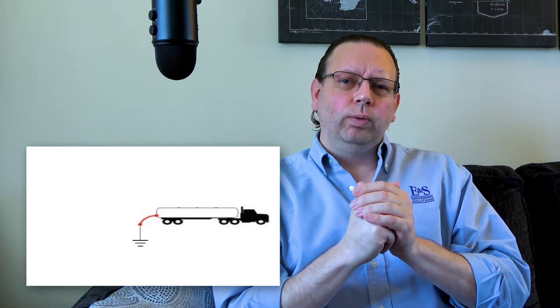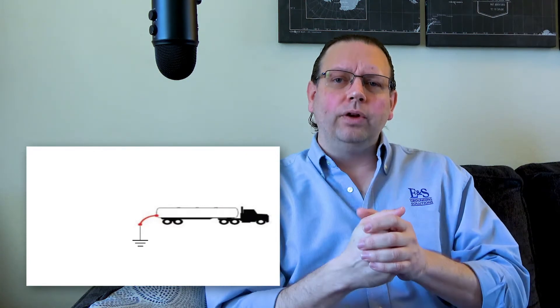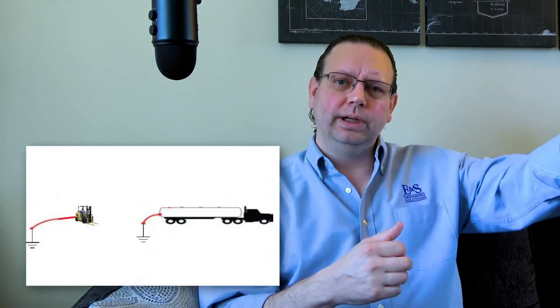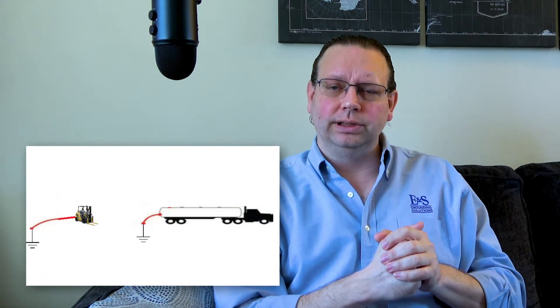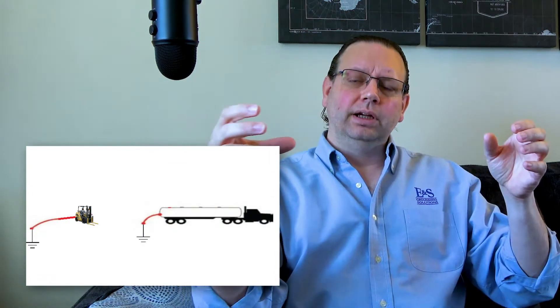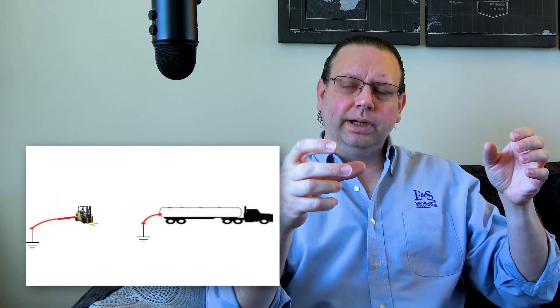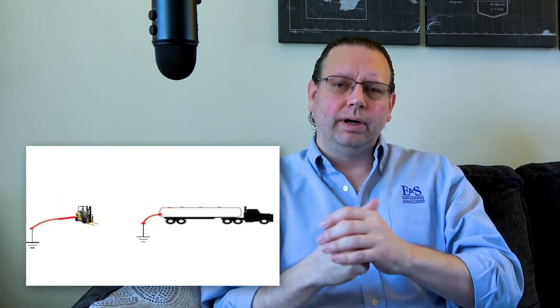If we were to ground the fueling truck, that would mean we would tie it to the earth. We provide any static electricity that may build up on it a connection to ground to get rid of those unwanted electrons. Same thing, the forklift pulls up to get refueled - it would also be tied to earth.